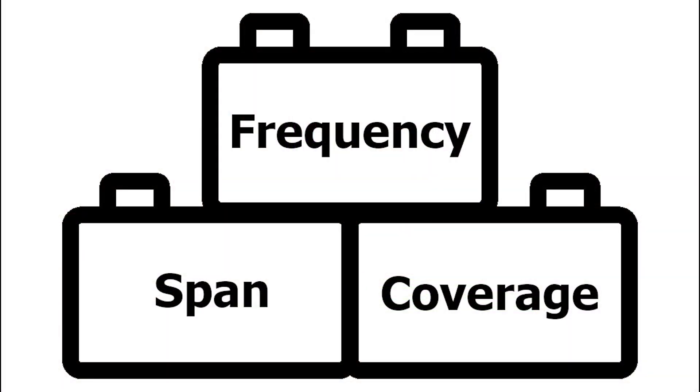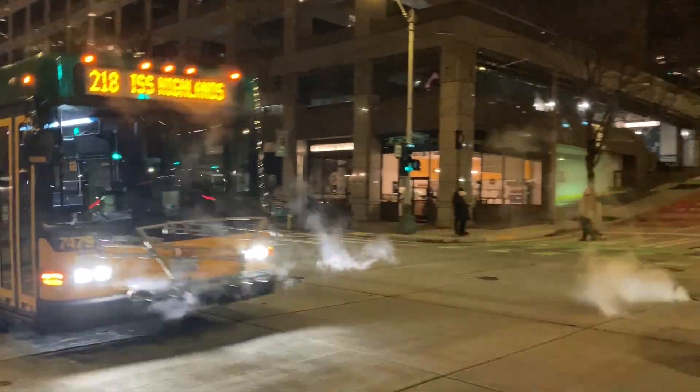The second transit building block is called span. Span is defined by how many hours of the day your transit service runs. Span is essential to transit because it tells people when and where they can travel — the more hours of a day and days of a week that a service runs, the more people will have access to it. For example, the span of MTS Route 204 in San Diego is from 5:58 a.m. to 10:01 p.m. on weekdays, or just over 16 hours a day. The 204 doesn't run at all on weekends, so it has no span on those days.